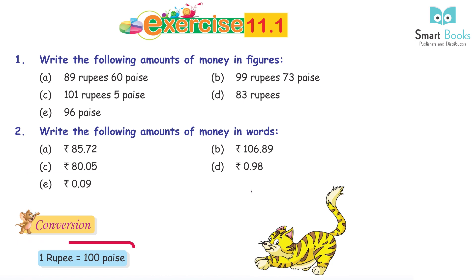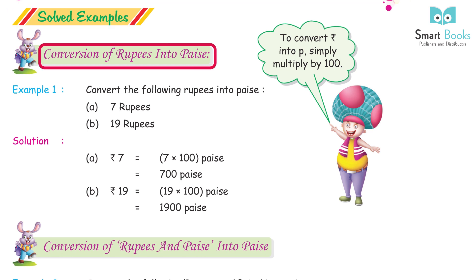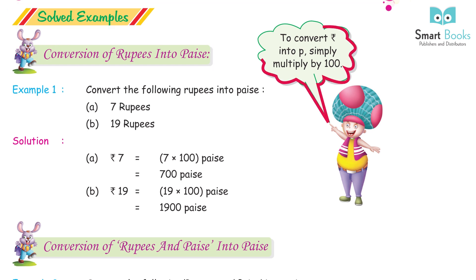Conversion: 1 rupee is equal to 100 paise. To convert rupees into paise, simply multiply by 100.